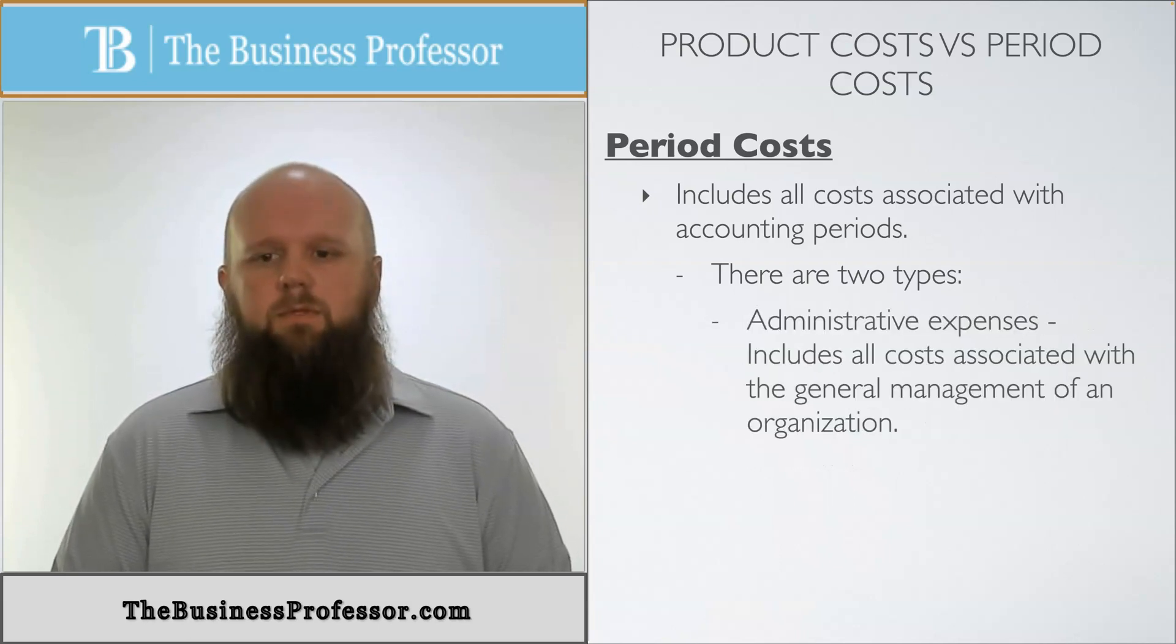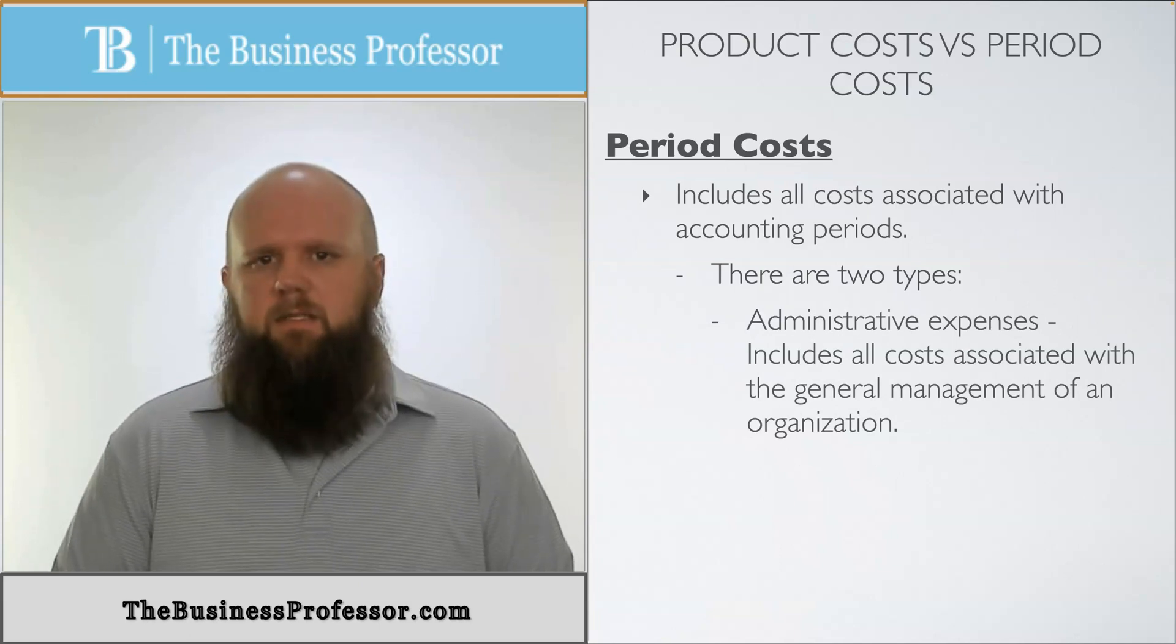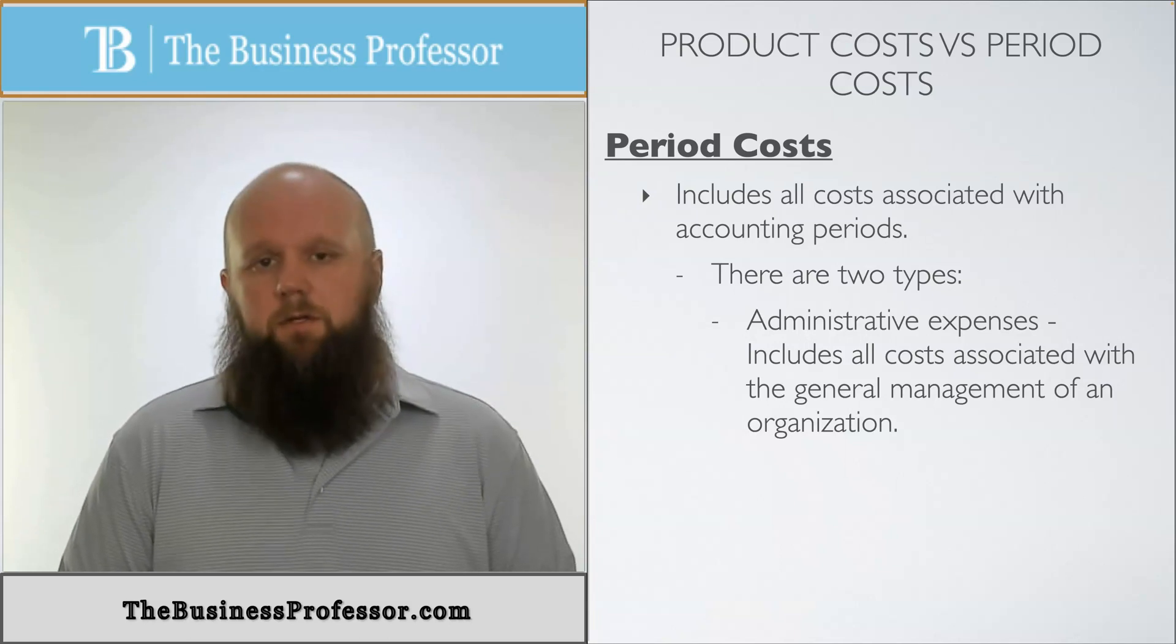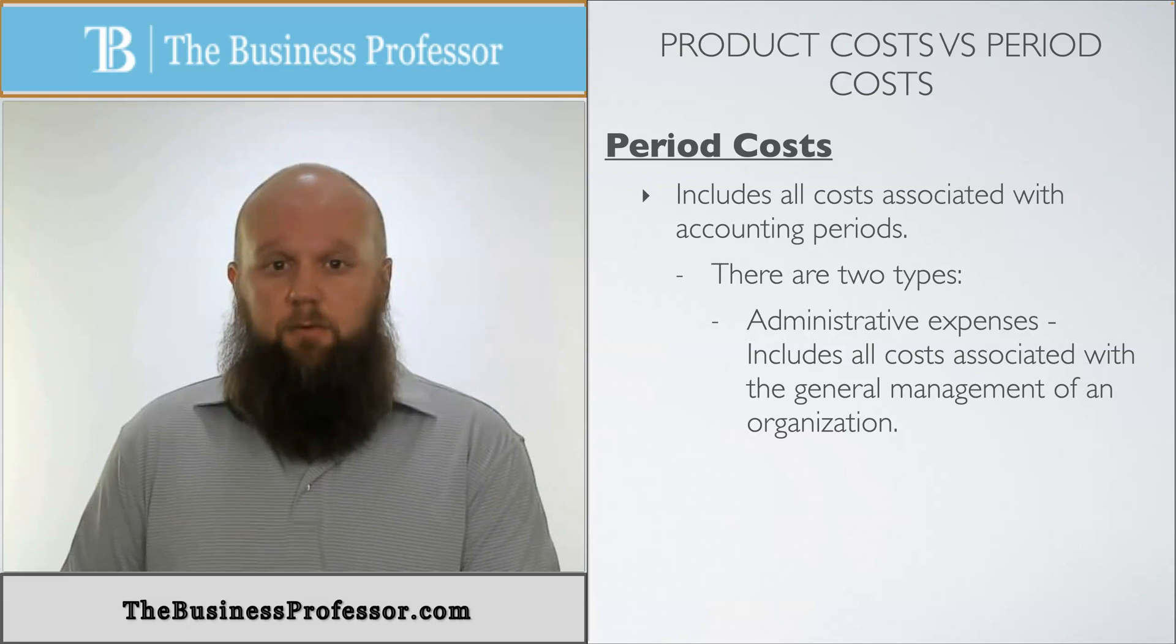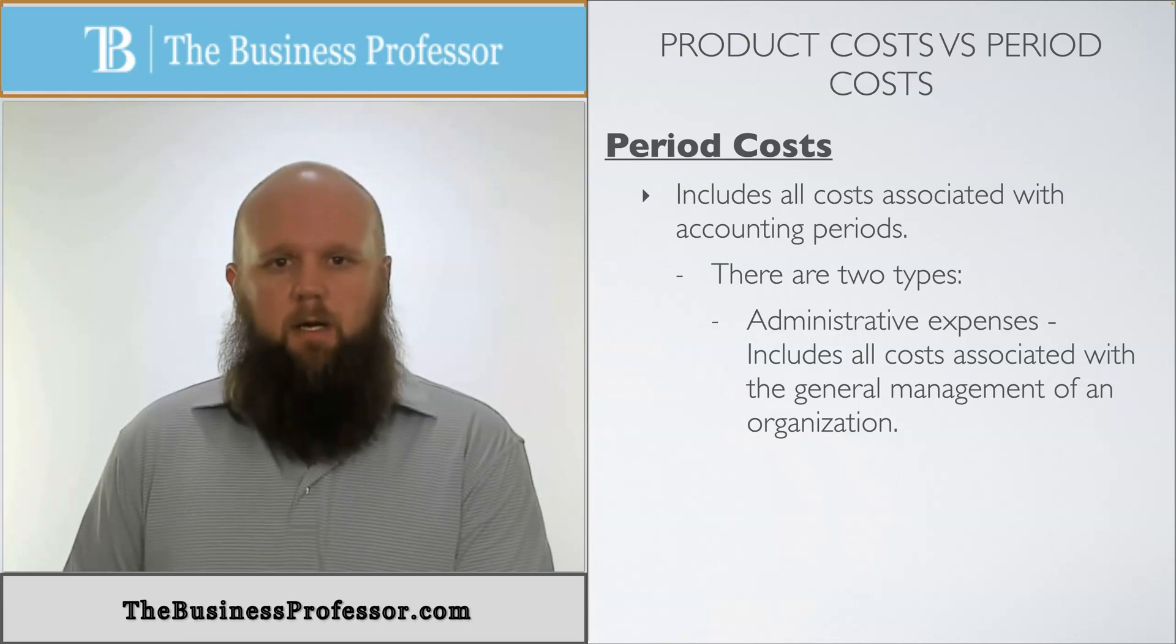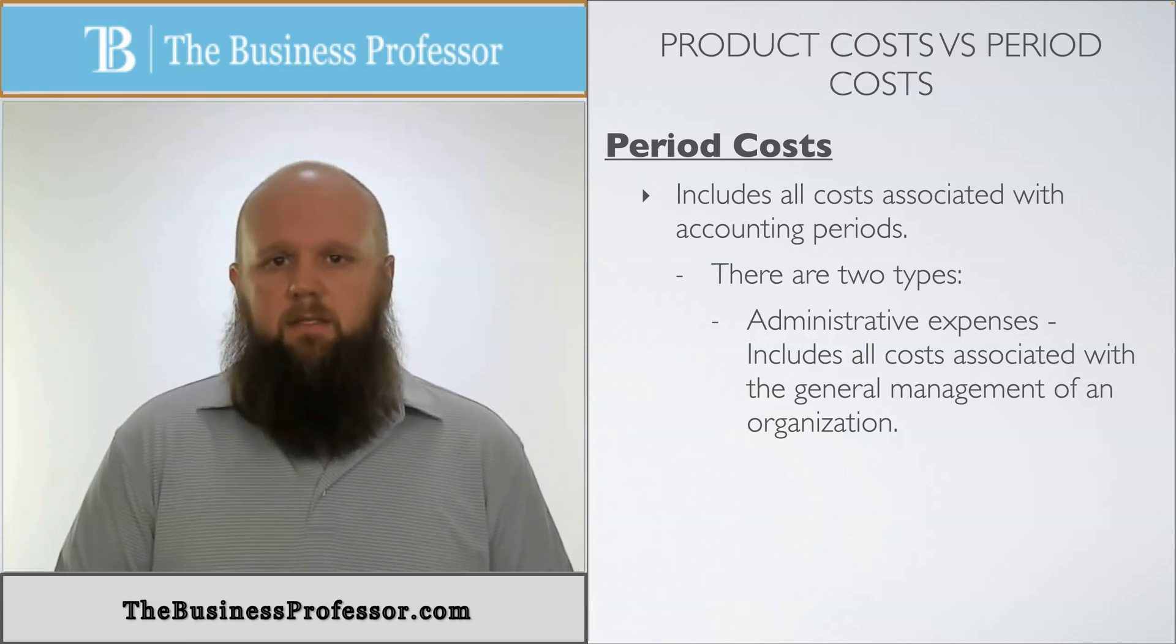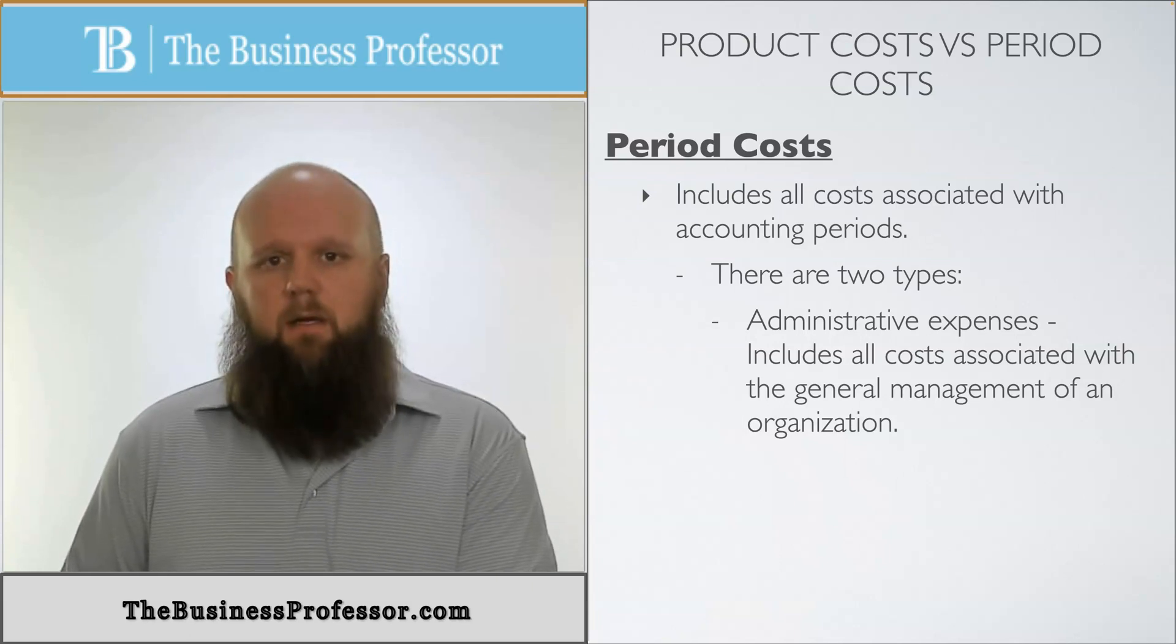And then we also have what's called administrative expenses. Sometimes you can see general in there, but administrative expenses in general include all costs associated with the general management of the organization. So these are going to be the salaries of your CEO, your CFO, maybe the salaries of your legal team, the salaries of your accountants. These employees of the company have nothing to do directly or indirectly with the creation of the product, but they are more associated with how the company runs. So that's why they're considered period costs because they don't have their hands directly or really indirectly when it comes to the creation of the product.